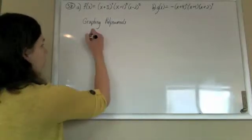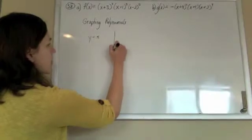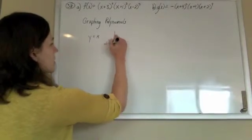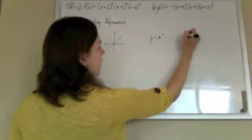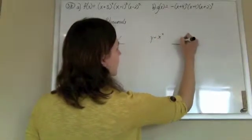So we are familiar with basic graphs. We know that y equals x is just a line. We know that y equals x squared is a parabola.